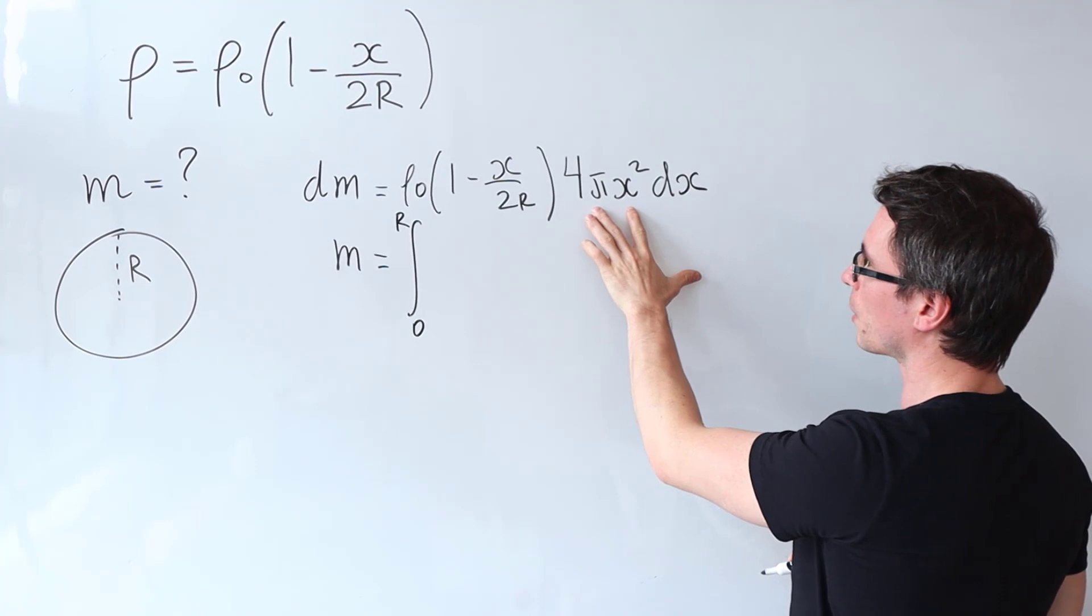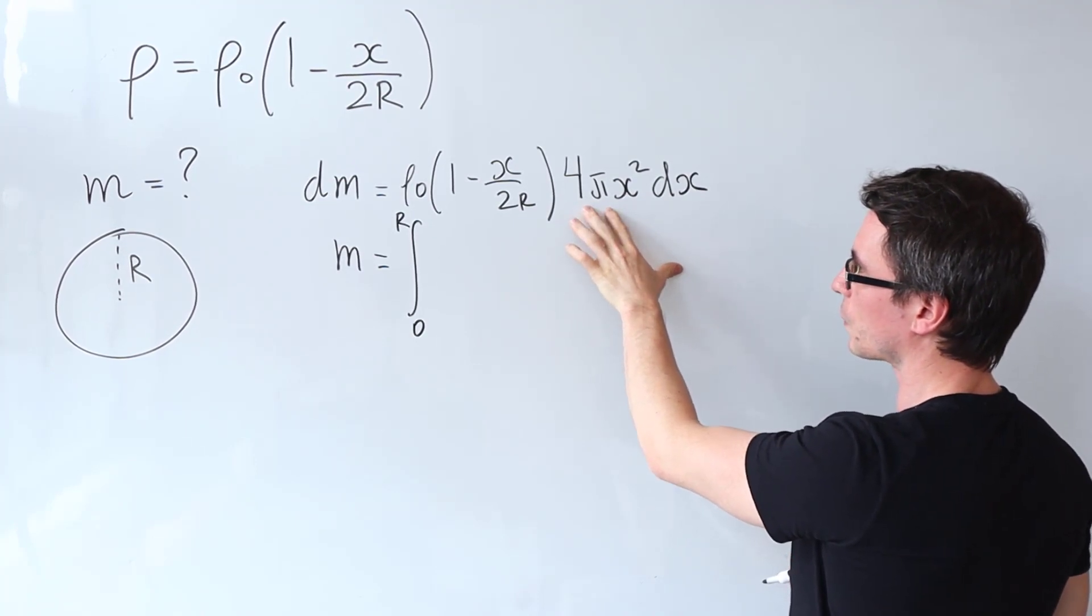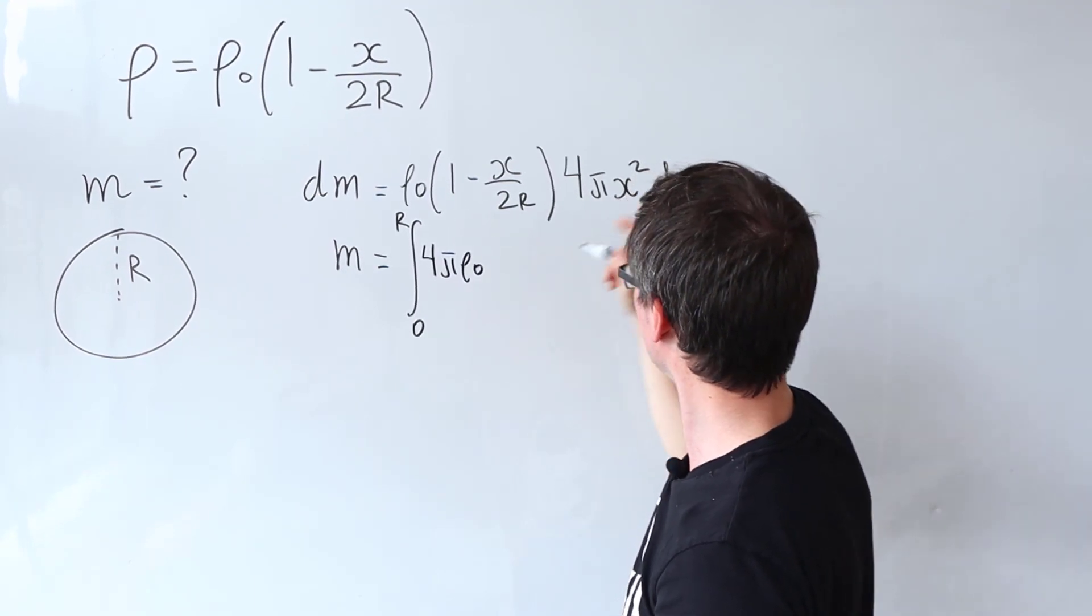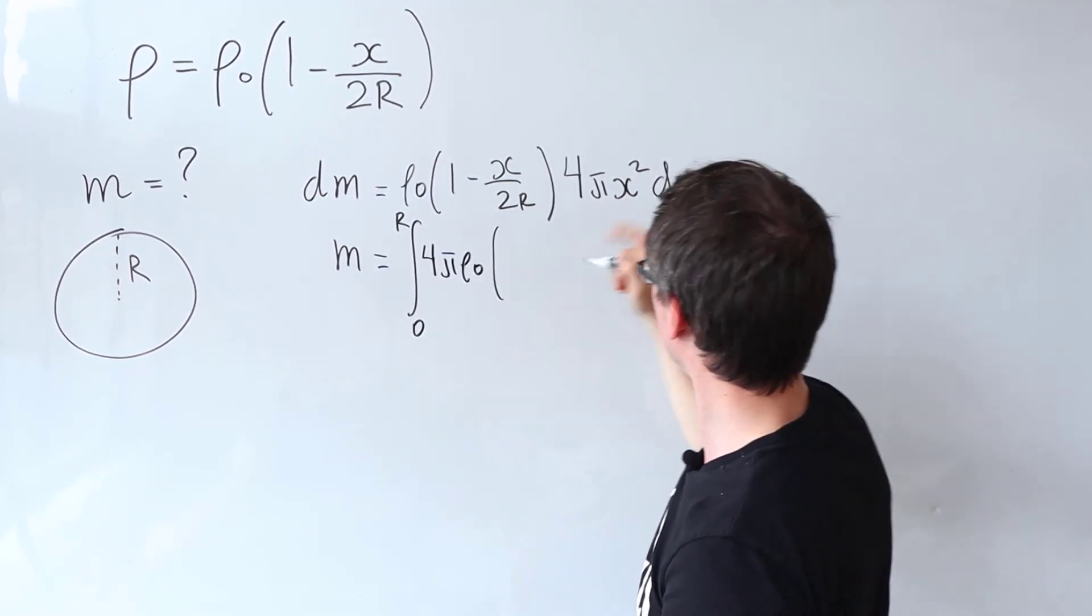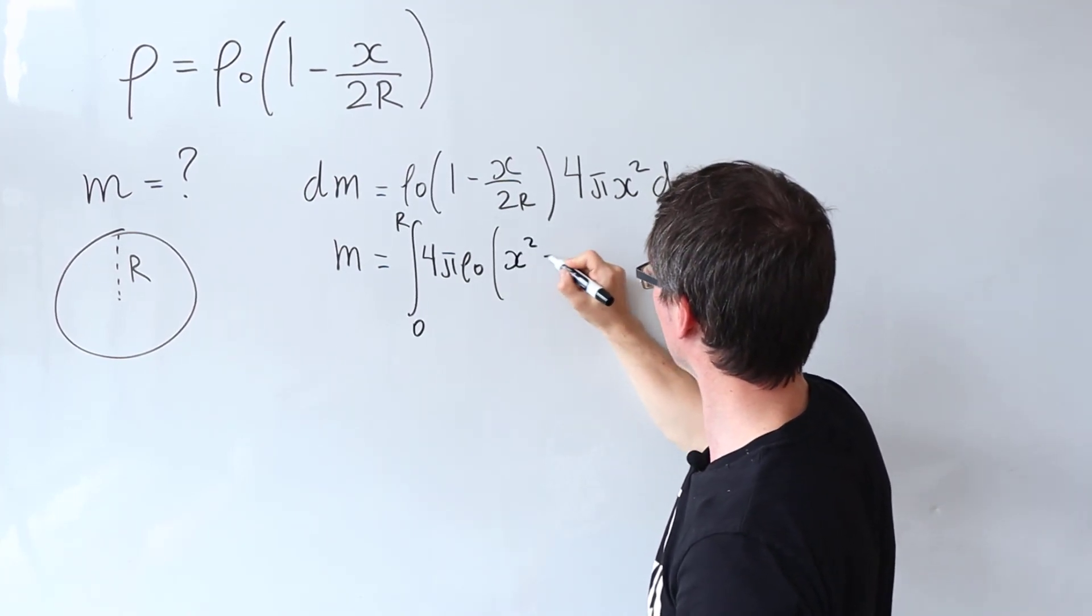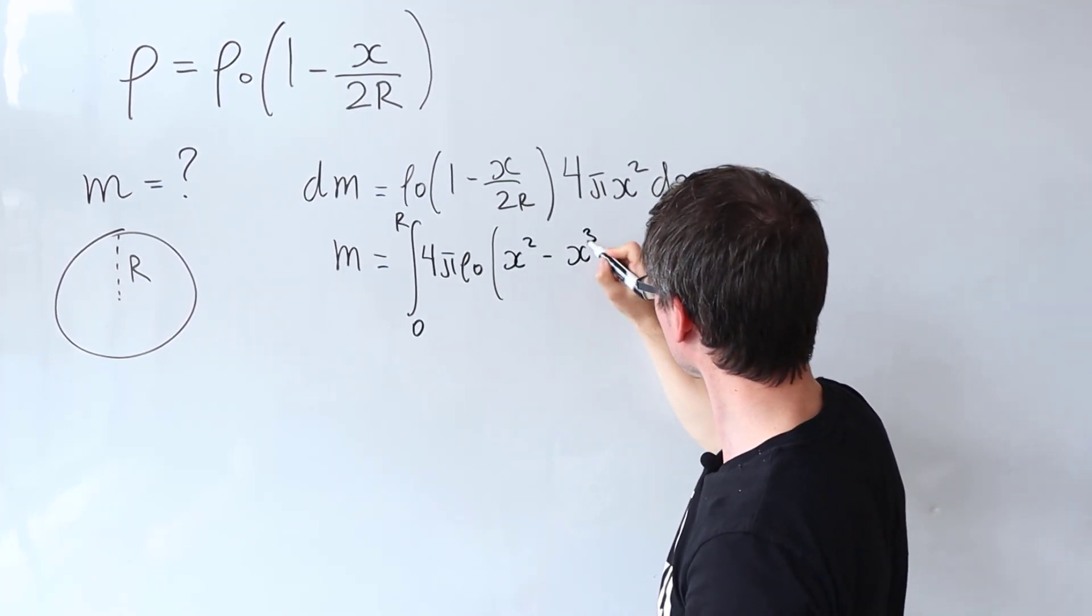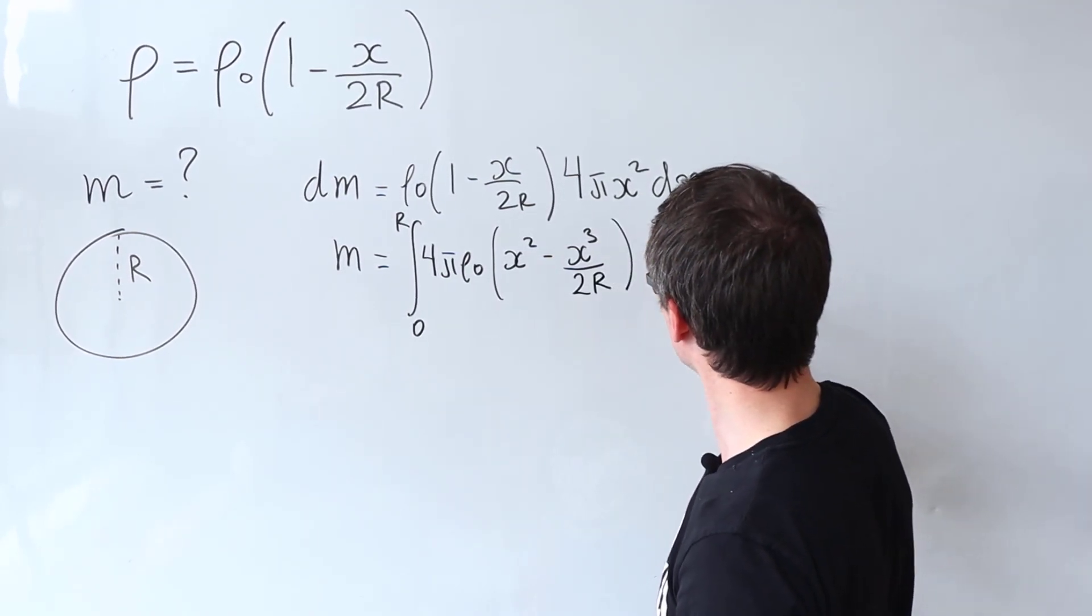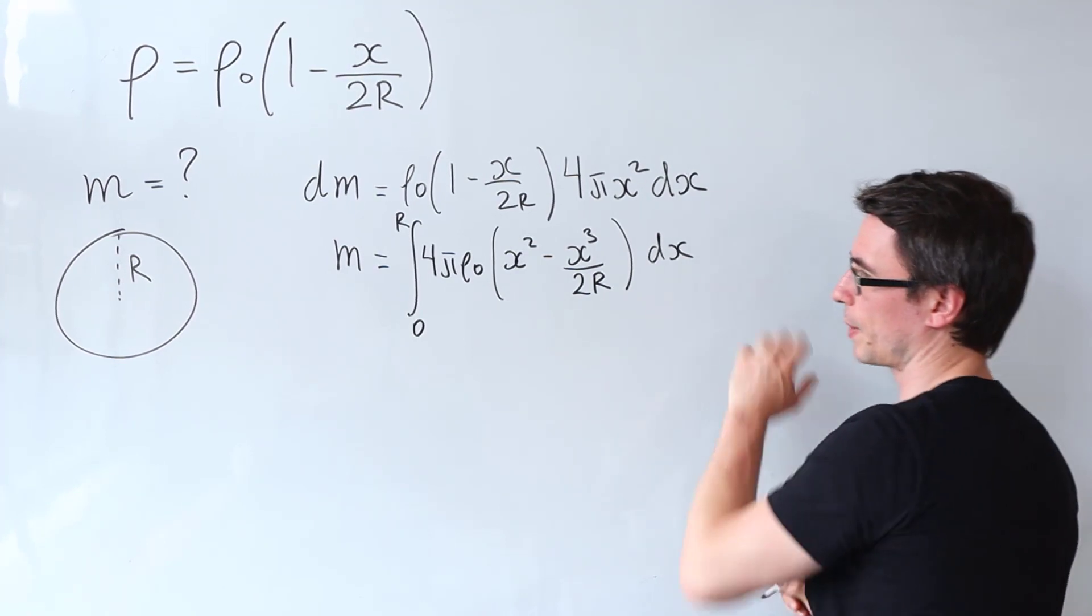Okay well first of all I'm going to bring these terms across here. I'm going to bring this x² inside here. So I'm going to get x² take away x³ divided by 2r. I'm going to be integrating that with respect to x.